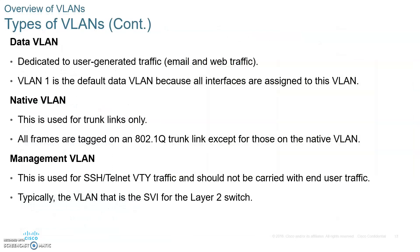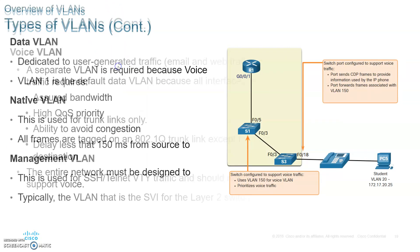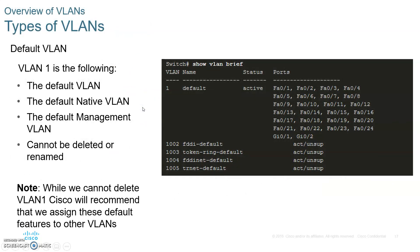Now let's talk about the types of VLANs. First, the default VLAN: the default VLAN is VLAN 1, and all ports are members of VLAN 1 by default. If you remove ports from another VLAN, they all go back home, and home is VLAN 1. The name VLAN 1 cannot be renamed, modified, or deleted — it will always be there and all ports are members of VLAN 1.